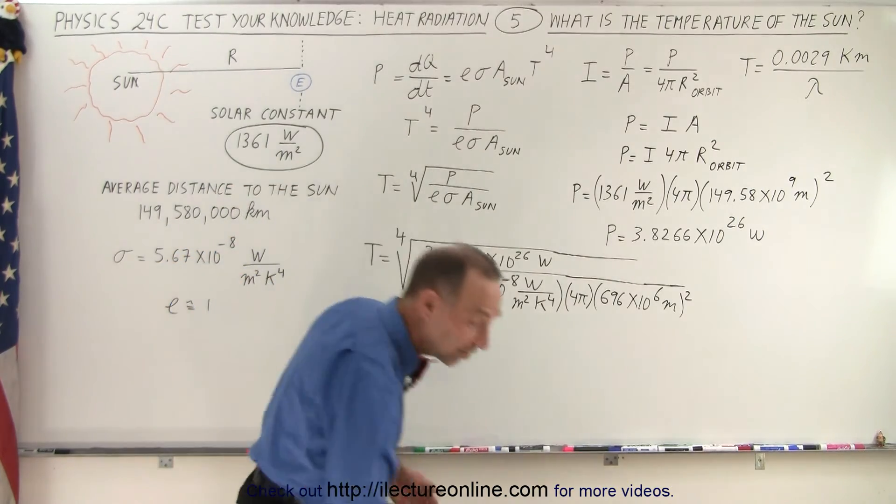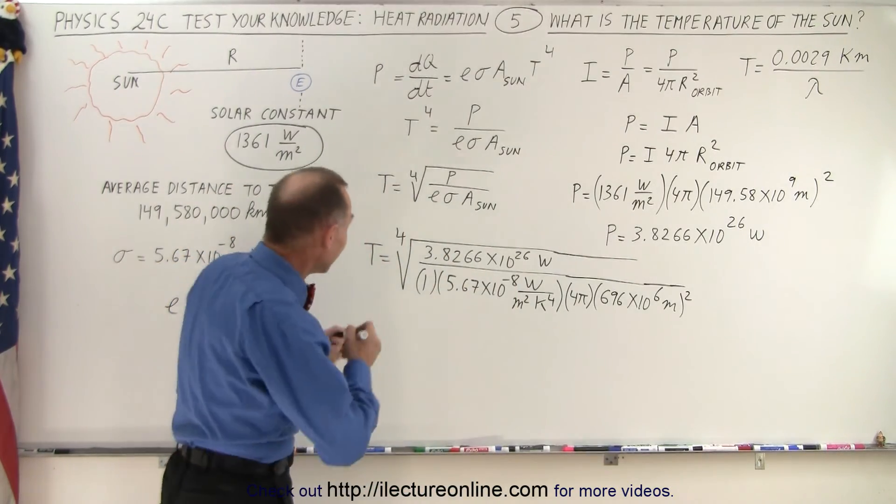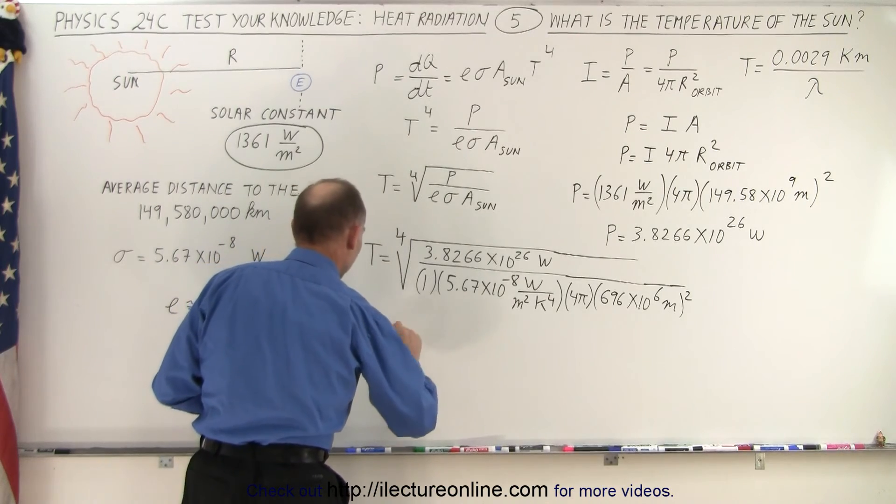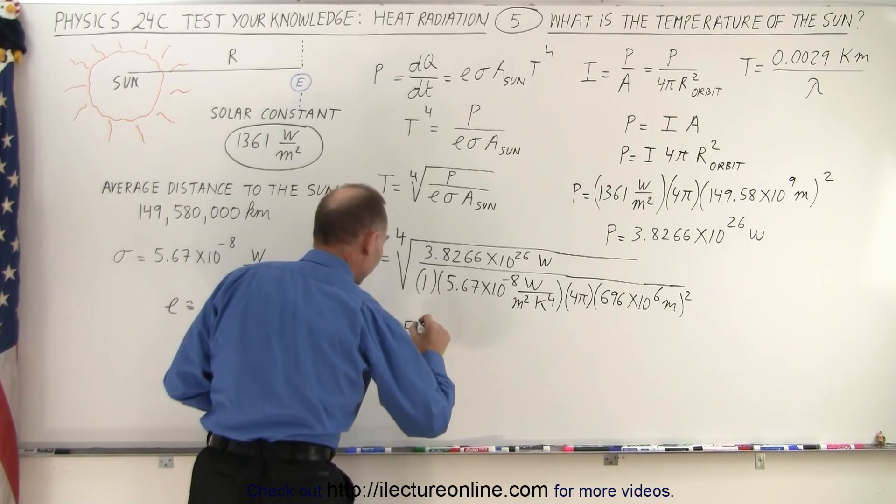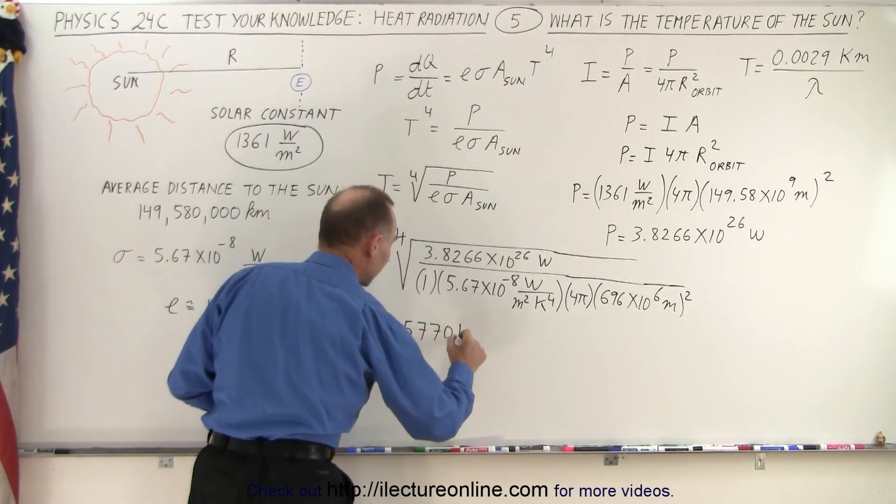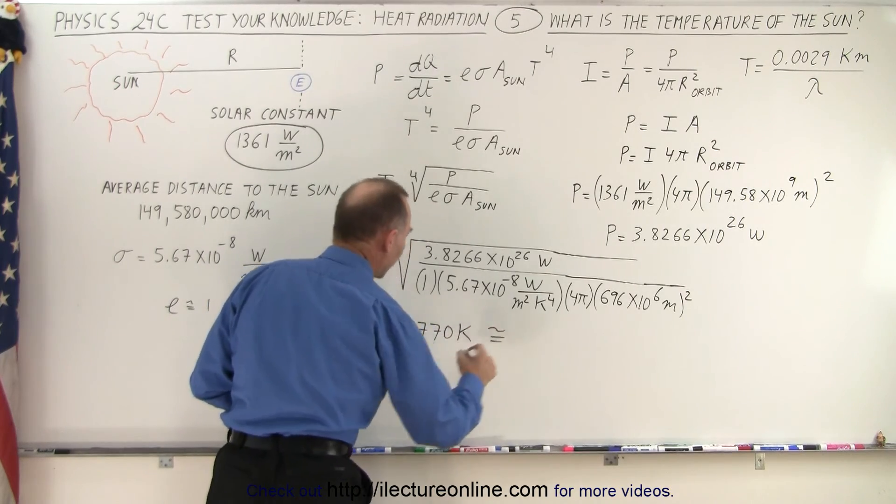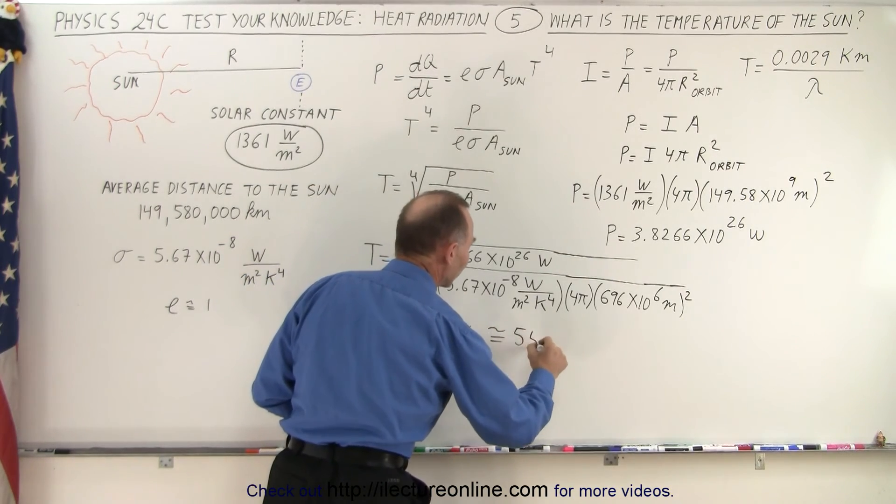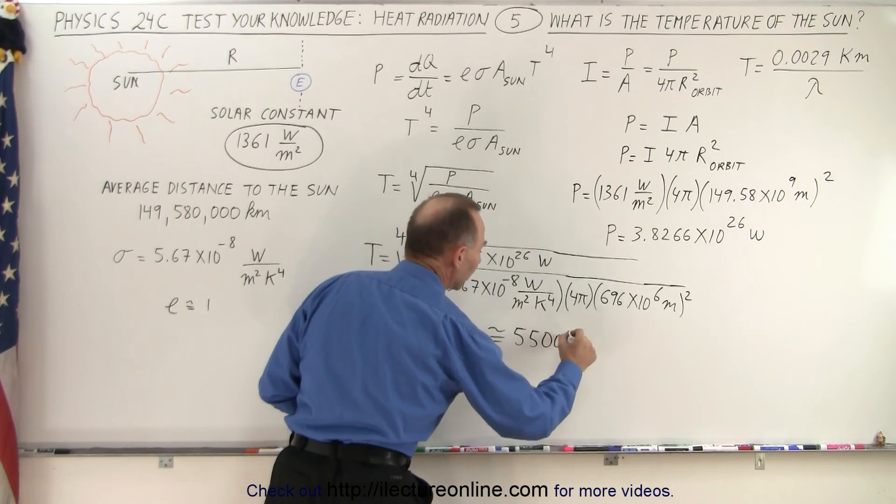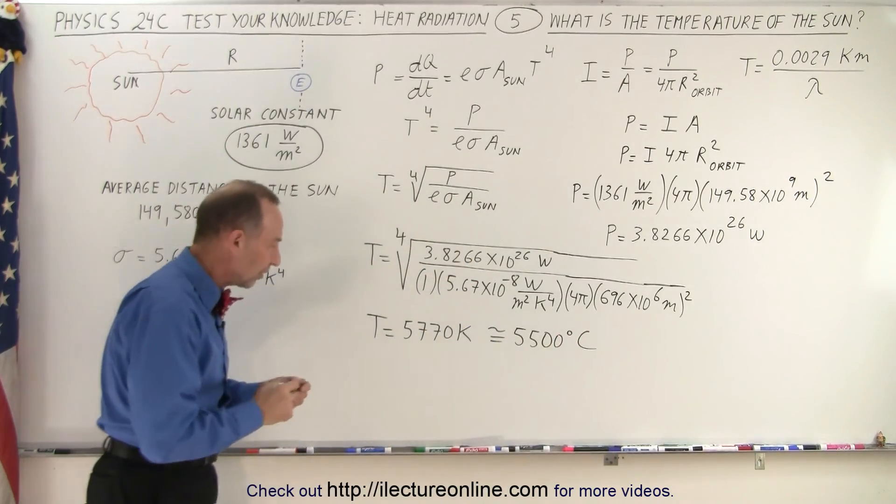So that's 5,770 Kelvin. Notice that's approximately equal to 5,500 degrees centigrade or Celsius.